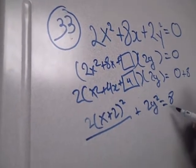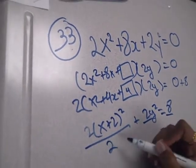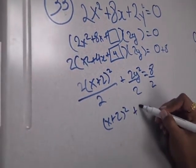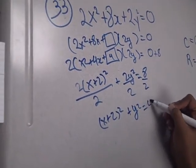And then you divide all of this by 2, and then you get (x + 2)² + y² = 4.